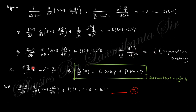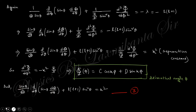So we have obtained the R solution and the phi solution. Now the remaining part is the theta solution. We write down the theta part of the equation, which equals k-squared, and then introduce the substitution mu = cos(theta) to convert it.